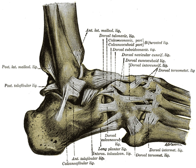The anterior ligament of the lateral malleolus, anterior tibiofibular ligament, or anterior inferior tibiofibular ligament, is a flat, triangular band of fibres, broader below than above, which extends obliquely downward and lateralward between the adjacent margins of the tibia and fibula, on the front aspect of the syndesmosis.